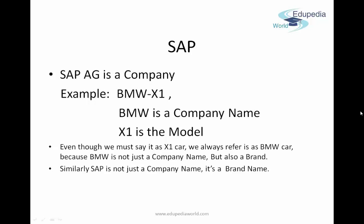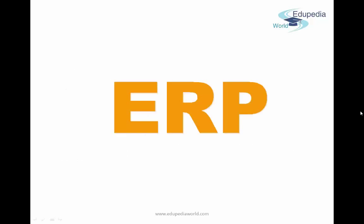SAP AG is a company. Taking the example of BMW X1 — BMW is the company name and X1 is the model name. Similarly, SAP software names always start with SAP, like SAP ECC 6.0, where ECC 6.0 is the software name and SAP is the company name. SAP is not just a company name — it's also a brand name, which is why most people say they are working on SAP software.